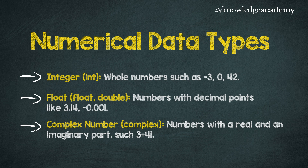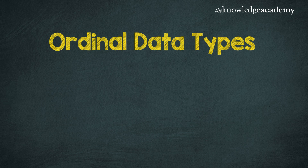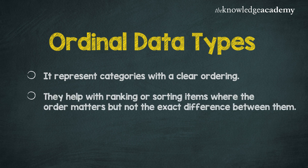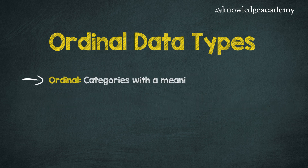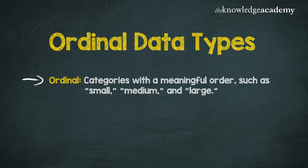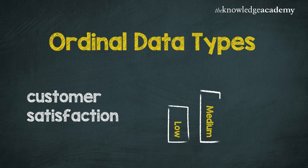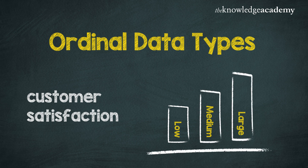Next, ordinal data types represent categories with a clear ordering. They help with ranking or sorting items where the order matters, but not the exact difference between them. Ordinal categories have a meaningful order, such as small, medium, and large. For example, ranking customer satisfaction as low, medium, or high helps in understanding levels of satisfaction.